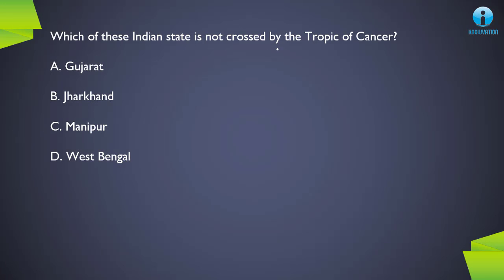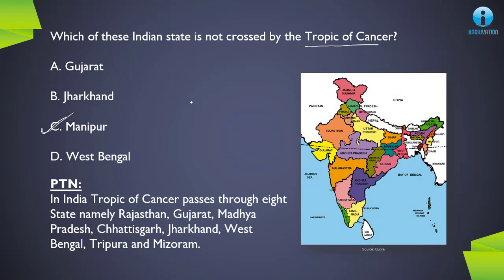Next question: which of these Indian states is NOT crossed by the Tropic of Cancer? The correct answer is C, Manipur. Looking at the map, the Tropic of Cancer passes through Gujarat, Madhya Pradesh, Rajasthan, West Bengal, Jharkhand, and others — this dotted line is the Tropic of Cancer. In total, the Tropic of Cancer passes through eight states: Rajasthan, Gujarat, MP, Chhattisgarh, Jharkhand, West Bengal, Tripura, and Mizoram. Manipur is not among these eight states, so it is the correct answer.